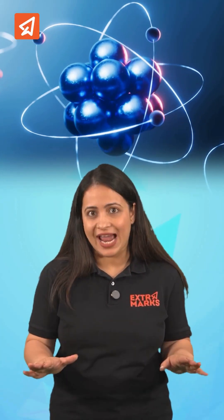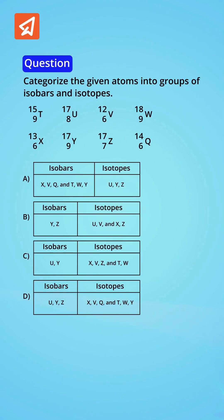Ever met atoms that look the same but don't act the same, or look different but still carry the same weight? Well, here we are talking about isotopes and isobars and learning how they are different from each other. Let's look at a question from a previous year Olympiad examination based on isotopes and isobars from grade 9 and master it in just 60 seconds.